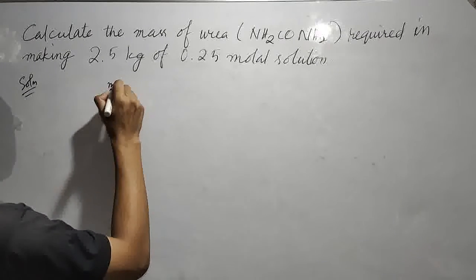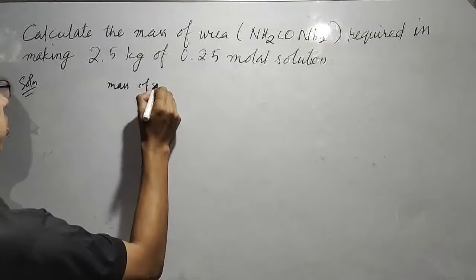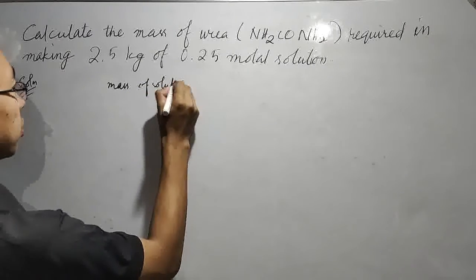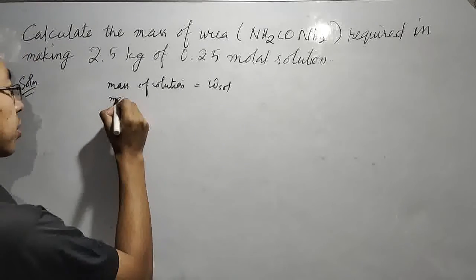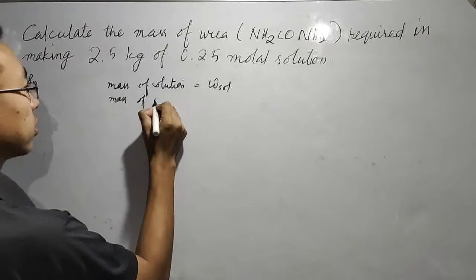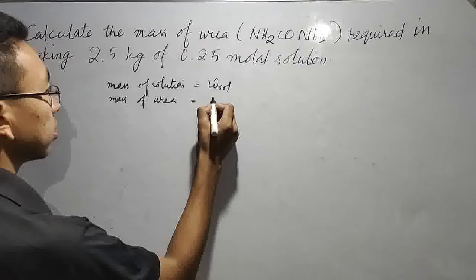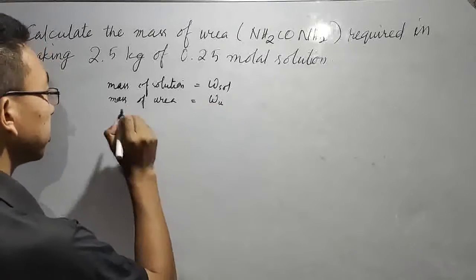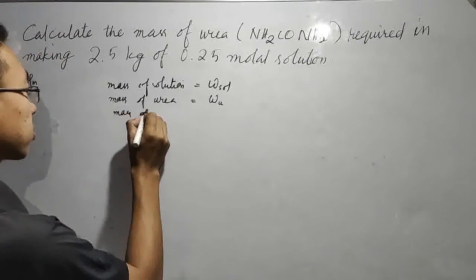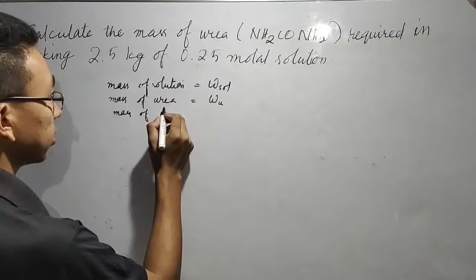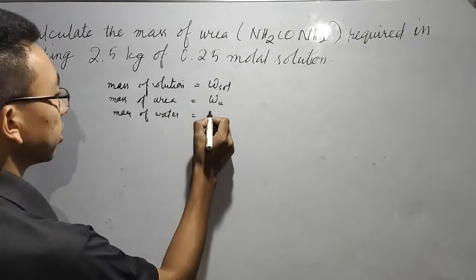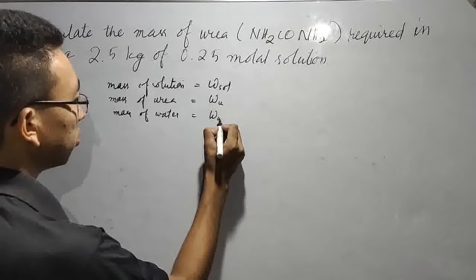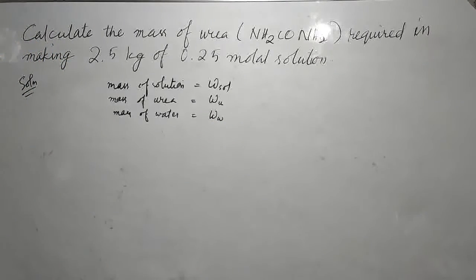Mass of solution, we write W_sol. Mass of urea, that is the solute, we write W_u. And mass of water, it is mixing water, so we write W_w.